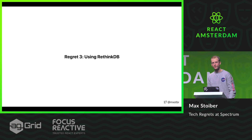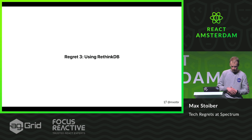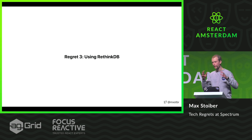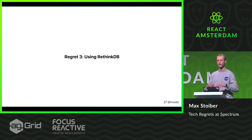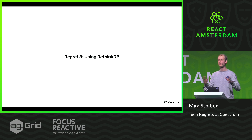My third regret is using RethinkDB. We're a chat app, and almost everything on Spectrum is real-time — the messages, the posts, the online statuses, the communities. A chat app without real-time is not a chat app; it's a forum. We looked at various databases but decided to go with RethinkDB because they have a feature called Change Feeds. Change Feeds allow you to listen to live updates on any database query — you put a .changes() at the end and get live updates whenever anything changes. I thought we could make everything real-time without having to build a separate PubSub layer, just use the database and get all the updates reliably.